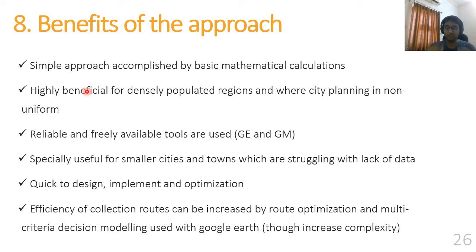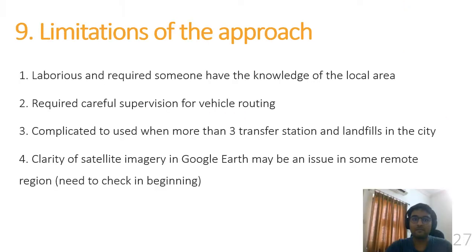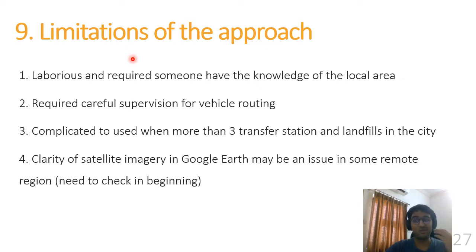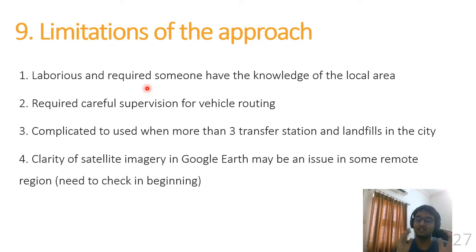If we want to further improve the efficiency of the system, we can use linear programming and multi-criteria decision modeling with Google Earth, even though that will increase the complexity. However, there are limitations with every approach. If using this method for a large city, it will be laborious, and vehicle routing requires careful supervision. Furthermore, if there are a greater number of transfer stations and landfills, it quickly becomes very complicated to design a collection and transportation system.